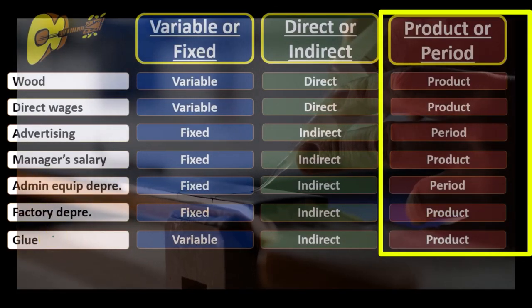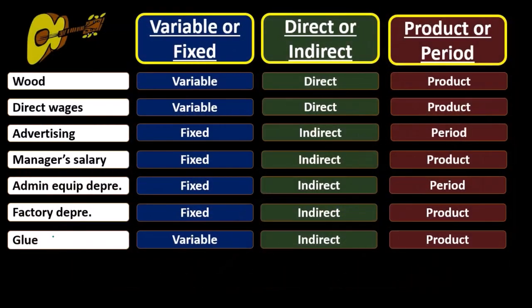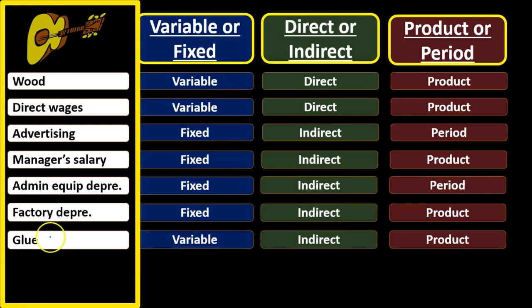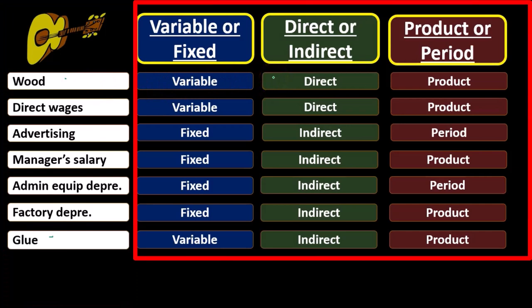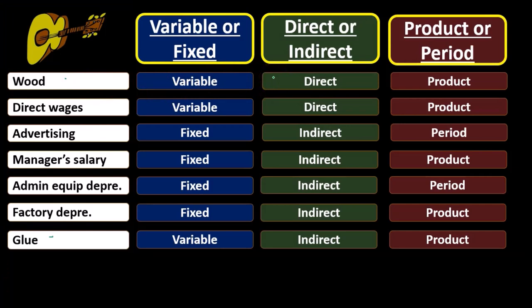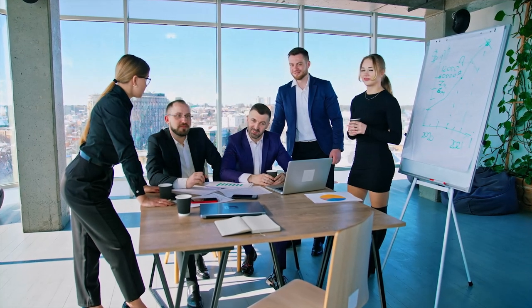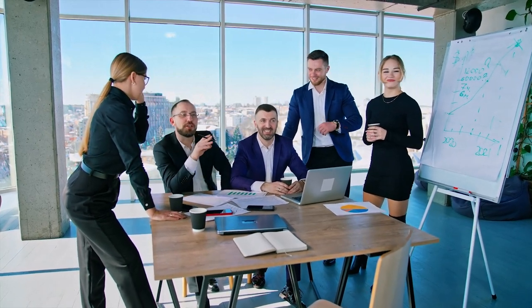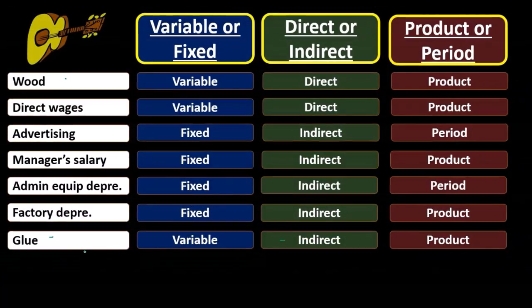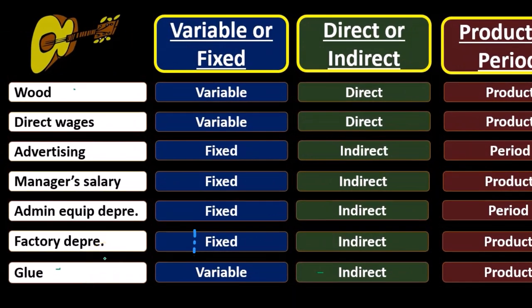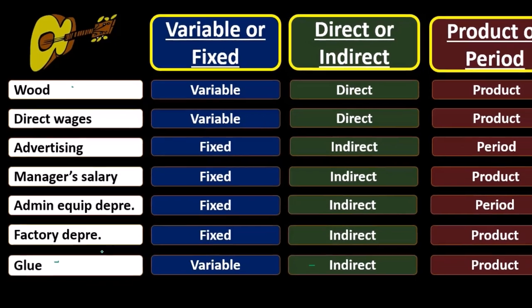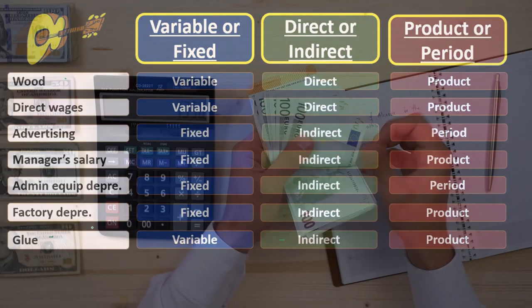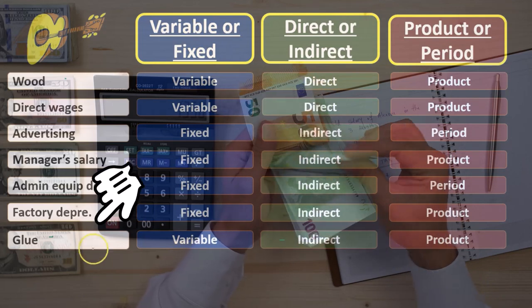The glue is pretty small compared to something like the wood. So if you compare glue and wood, the wood is variable and direct — we had to assign the wood we took out to a particular job. Whereas glue is variable but not direct, because we probably didn't document how much glue went to a particular job — it wouldn't be worth our time to track that. Therefore, it's an indirect cost, and we take whatever we paid for the glue overall and allocate it using some kind of allocation method.